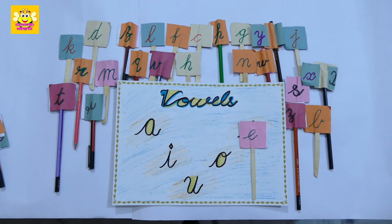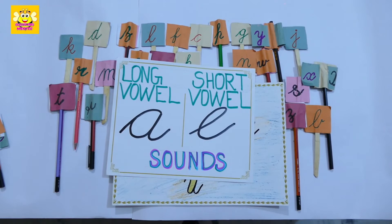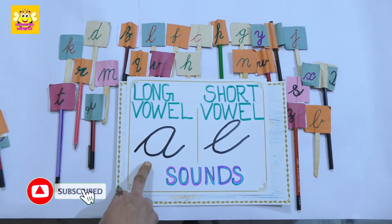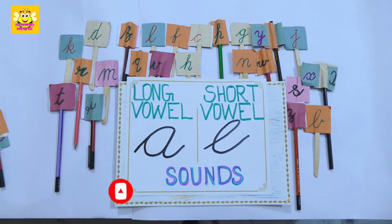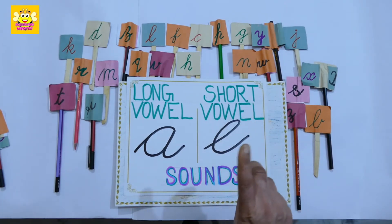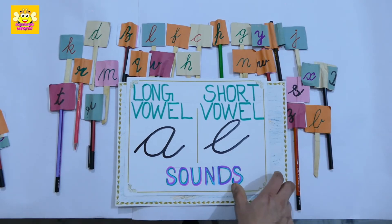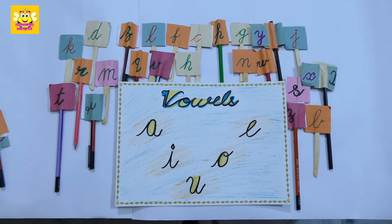Let's start. Before starting the sounds, let's quickly revise: vowel A sound is a long vowel sound, and vowel E sound is a short vowel sound. Remember this. Okay, let's do the revision as well as we will join the words.